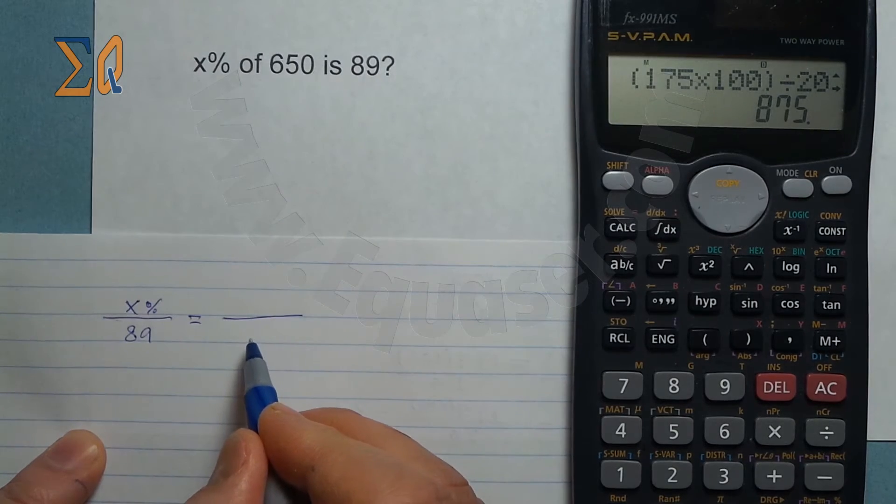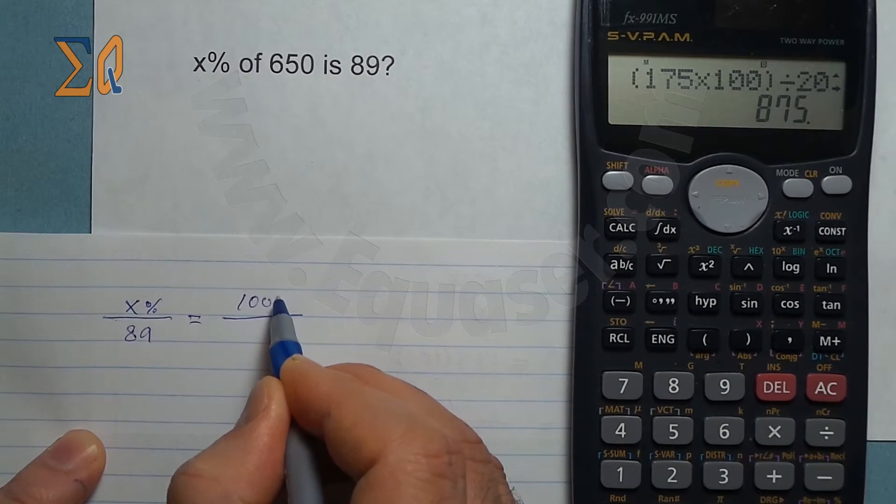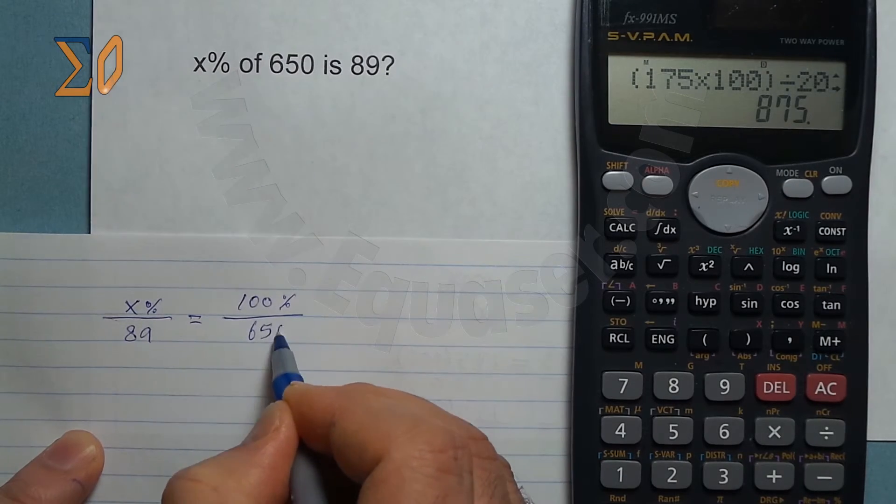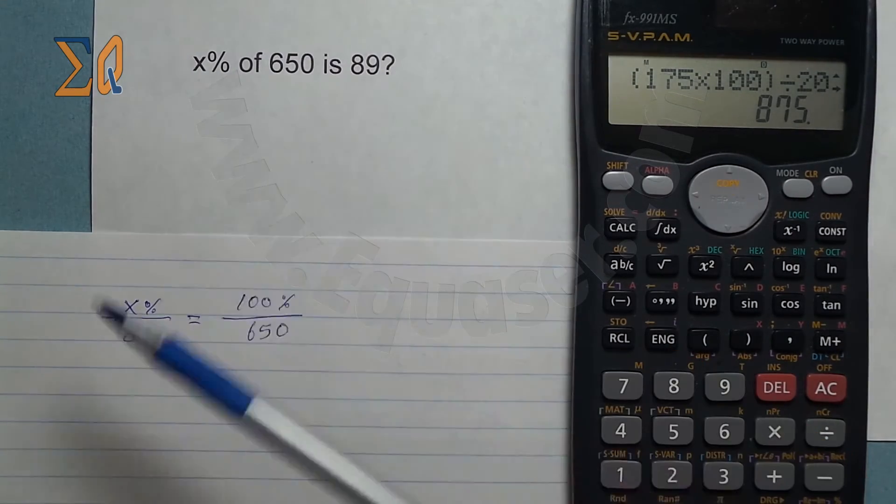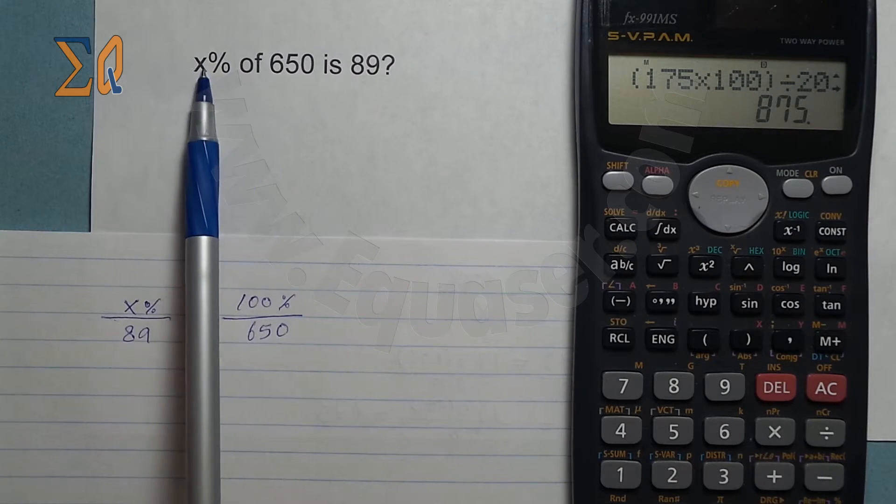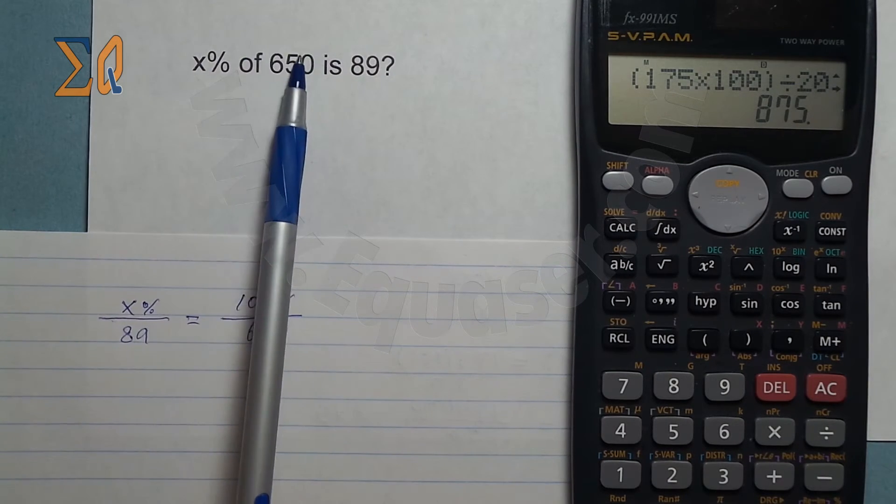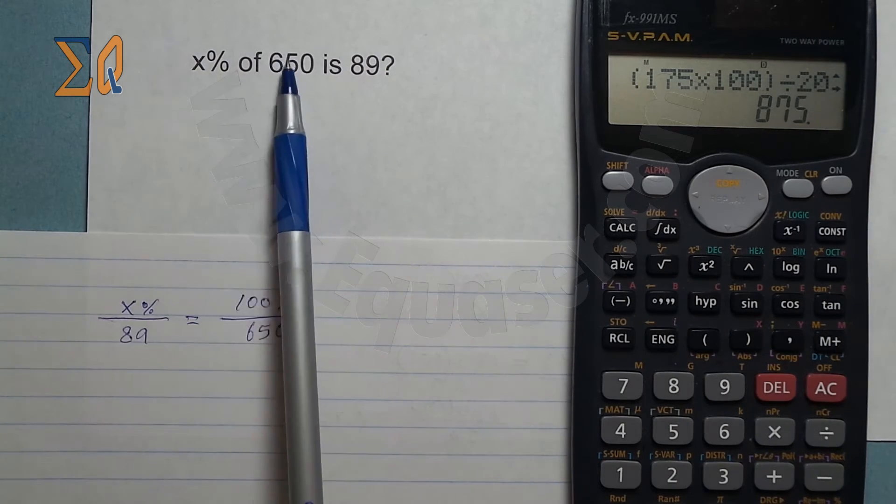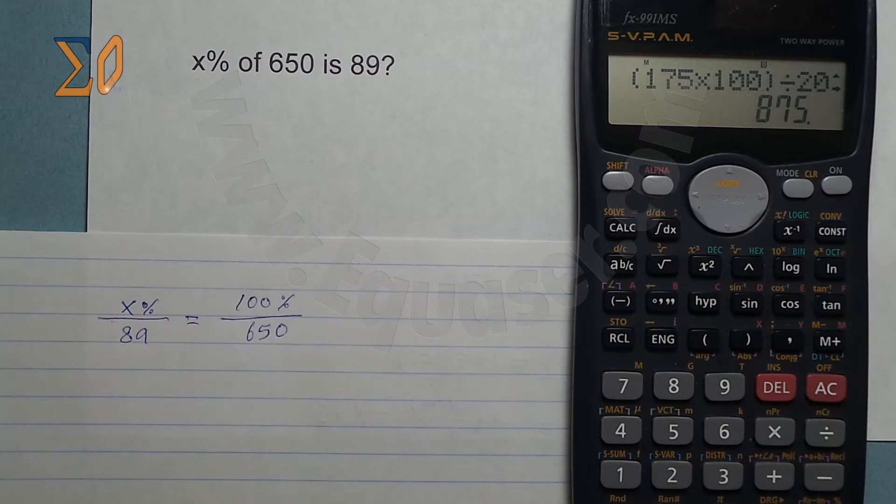So that is 100 percent is 650. Now you see the relationship here. Some percent of this one is some amount. I write it like that, and 650 is the whole amount. Also you know that 89 is a very small value of this.